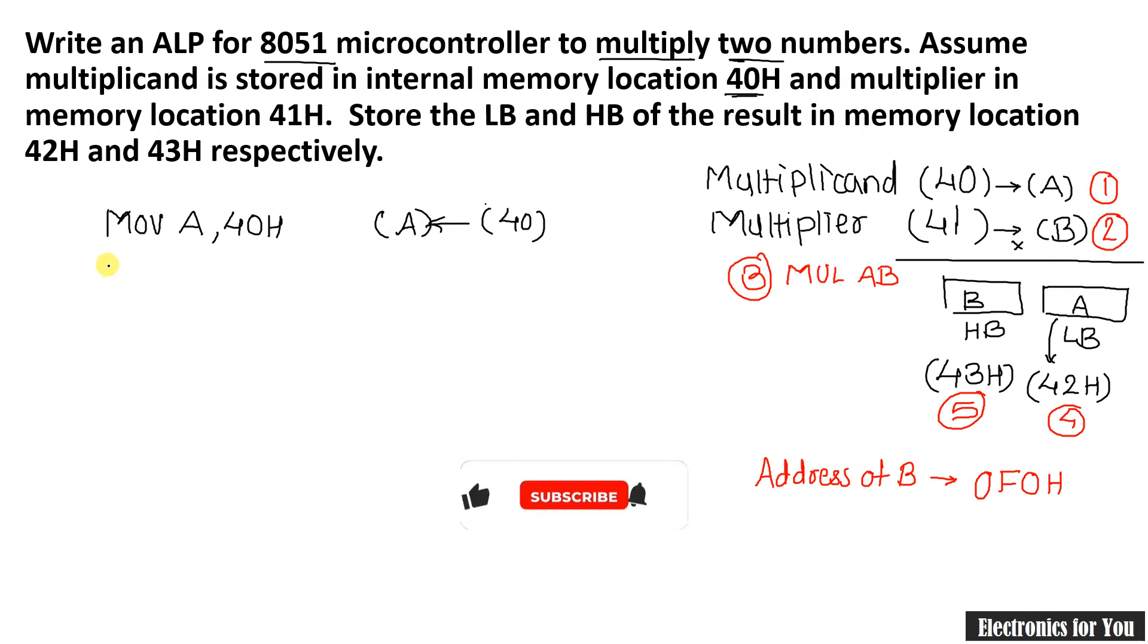Now next step is to take content of 41H into B register. Now as I have previously told we don't have MOV B, 41H and therefore we will use MOV 0F0, that is the address of B register. We are using direct addressing mode here and memory to memory transfer is used here. So it is likewise that the data at 41H is moved to B register.